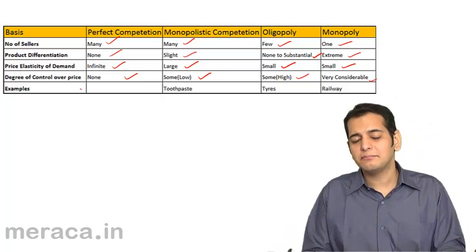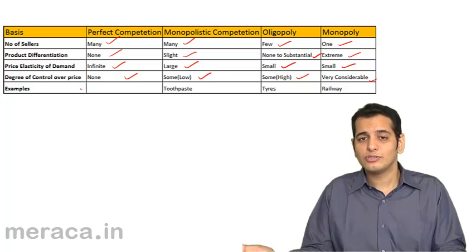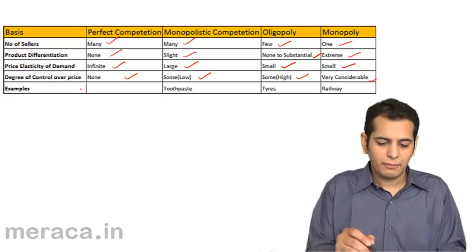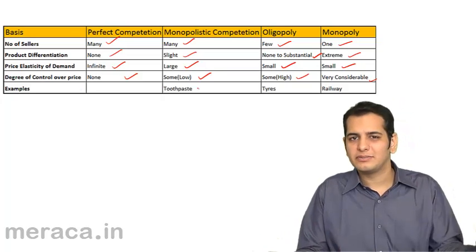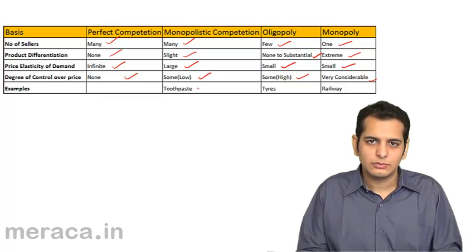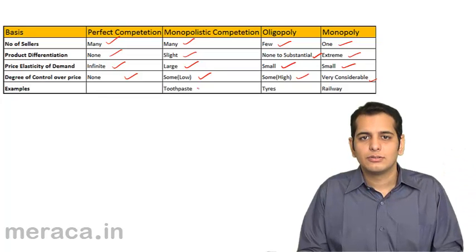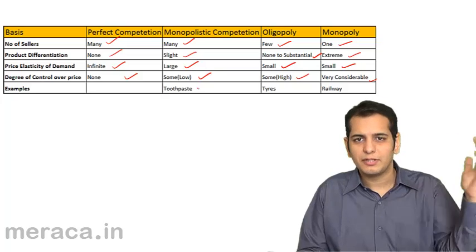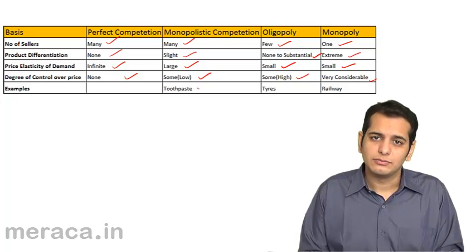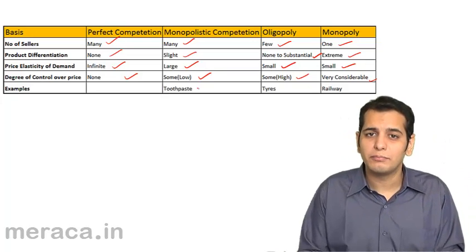For examples: perfect competition has no real-world examples as it does not exist in practice — it's a theoretical concept. Monopolistic competition has many examples: soaps, toothpaste, toothbrushes, perfumes, deodorant sprays — all with many manufacturers and products that tend to differ from each other. All these products form part of the monopolistically competitive market.